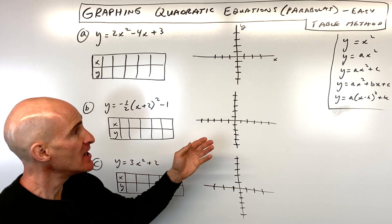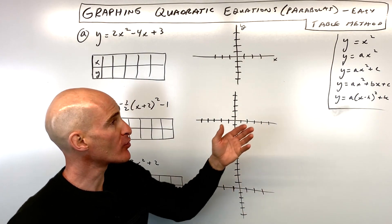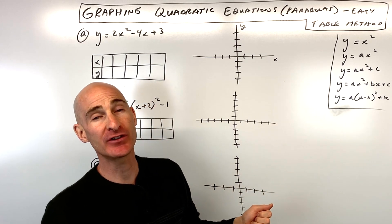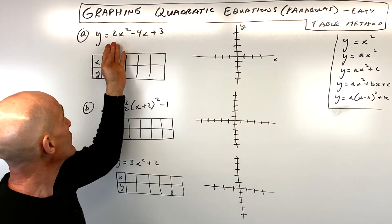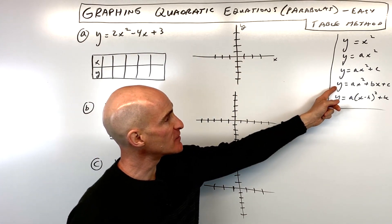But the key is to find the vertex of the parabola, knowing what form the parabola is in and how to find that vertex. So let's go through three examples. The first one, y equals 2x squared minus 4x plus 3, is in this form right here.